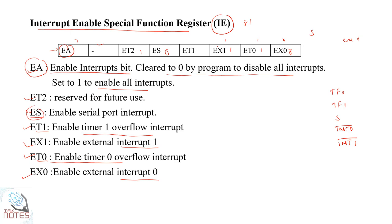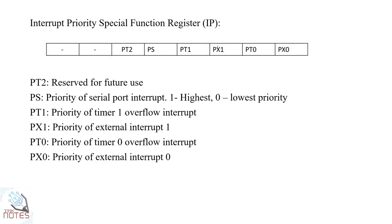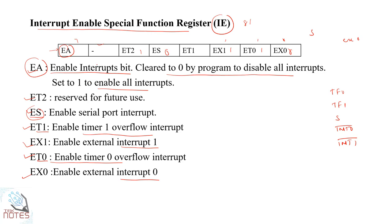Priority is set using the IP register. They are at the lowest priority by default. In these cases, you will set the priority to get the priority set. The IP register is a special function register with a priority position. The bits are PX0, PT0, PX1, PT1, PS, and PT2.